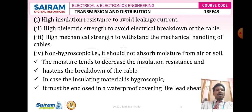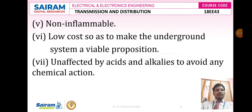The material should be non-hygroscopic, meaning it should not absorb moisture from air or soil, as moisture tends to decrease the insulation resistance and hastens the breakdown of the cable. In case the insulating material is hygroscopic, it must be enclosed in a waterproof covering like a lead sheet. It should be non-inflammable, low cost to make the underground system a viable proposition, and unaffected by acids and alkalis to avoid any chemical action.